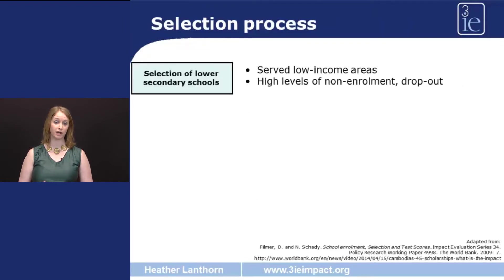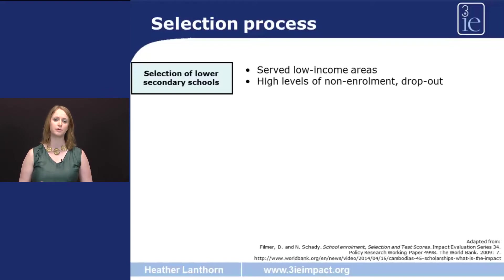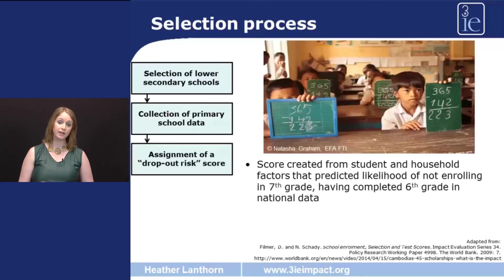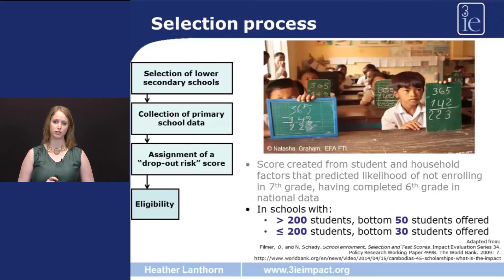Now let's look at how selection into the process worked, because the eligibility criterion is what allows these researchers to estimate causal impact of the program. First, the government looked at all secondary schools in the country and chose those specifically in underserved areas where there were already high levels of non-enrollment and high levels of dropout. They then looked at the primary schools that fed into those secondary schools and had all sixth grade students fill out a small application form where they gave details about household assets and other aspects of socioeconomic well-being. Using these data and a particular algorithm, they calculated a dropout risk score for each student — the risk of the student not progressing from sixth to seventh grade — and it's this criterion that was used for the regression discontinuity design.